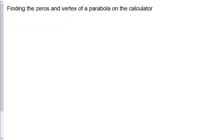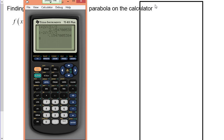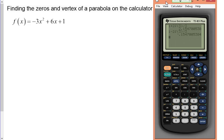Next, let's find the zeros and vertex of a parabola using a graphing calculator — a very helpful skill. We'll graph f(x) = -3x² + 6x + 1 on the calculator. Hit y= to enter the function.